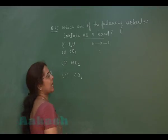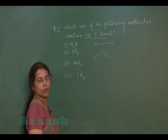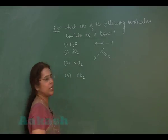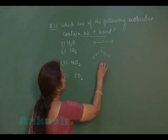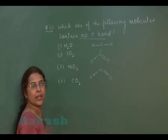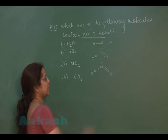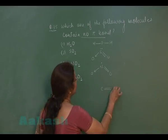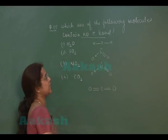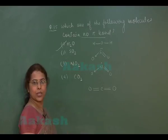If it is the structure of sulfur dioxide, sulfur is surrounded by 2 oxygen atom, one is making double bond and other one a coordinate bond. Sulfur is also having a lone pair electron. In this structure of NO2, nitrogen atom making a coordinate bond with one oxygen atom. If we see the structure of carbon dioxide, there is double bond between carbon and oxygen atom on both the sides.